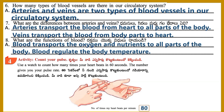Section 4: Activity — Count your pulse. Use a watch to count how many times your heart beats in 60 seconds. The number gives you your pulse rate. Thank you.